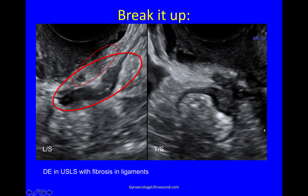Here you can see a bowel nodule — this is deep endometriosis in the bowel. You can see some normal muscularis layer. This is the anterior rectal wall, and this is the dark muscularis with that very fine line, which is between the longitudinal and the circular muscle fibers in the muscularis layer. So this is normal muscularis going into a nodule of deep endometriosis in the bowel wall.